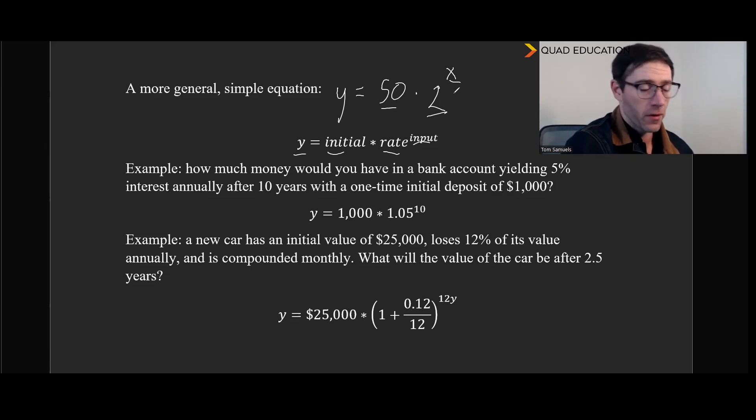And so one application of exponential growth and decay, which you'll see very often in the real world, is interest and compounding growth and decay there. So the example here, how much money would you have in a bank account yielding 5% interest annually after 10 years in that account with only a one-time initial deposit of $1,000? So what that's telling you is we basically have a general equation of y equals whatever that initial deposit is multiplied by our growth rate. So this is why knowing percentages is so important for exponential growth and decay, because you need to understand that 1.05 is 5% growth. If you were to say this is 0.05 rather than 1.05, that would be a 95% decay, because the 5% is what we gain, but we still have our initial value. We're not going to lose $1,000 for having this money in the bank every year. We're going to make $50.